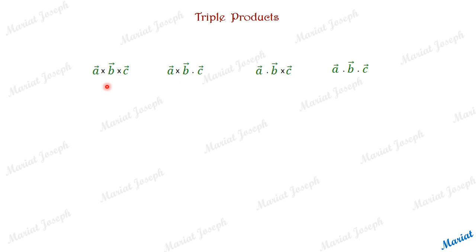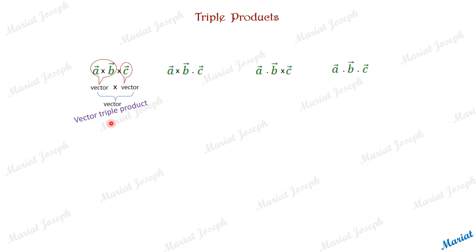First one: A cross B is a vector since it is a cross product, and C is also a vector. The cross product of two vectors results in a vector. This is called the vector triple product — the ultimate result is a vector, which is why it is called a vector triple product.